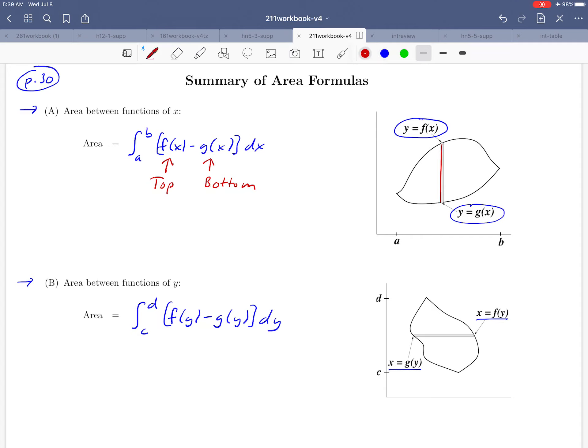Notice that from the picture this time, f of y is the curve that's on the right and g of y is the curve that's on the left. And again, f of y minus g of y is giving you the length of this rectangle and dy is giving the height, so you're talking about an area again.